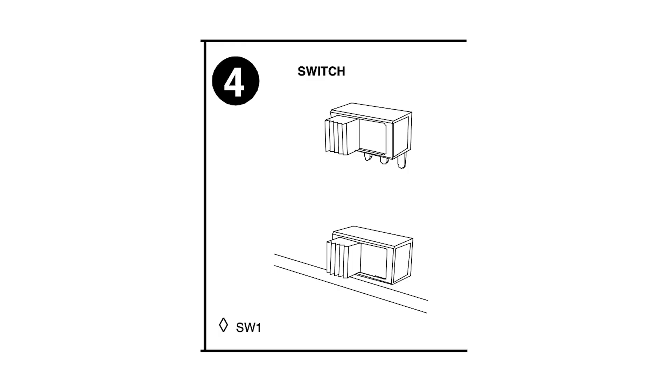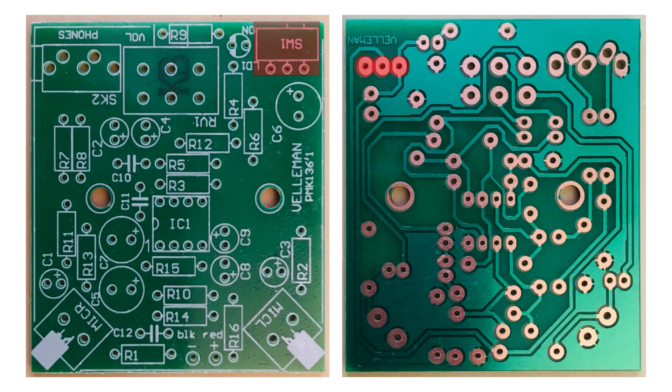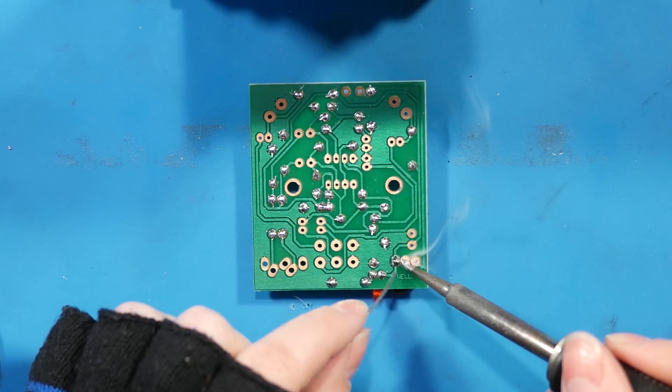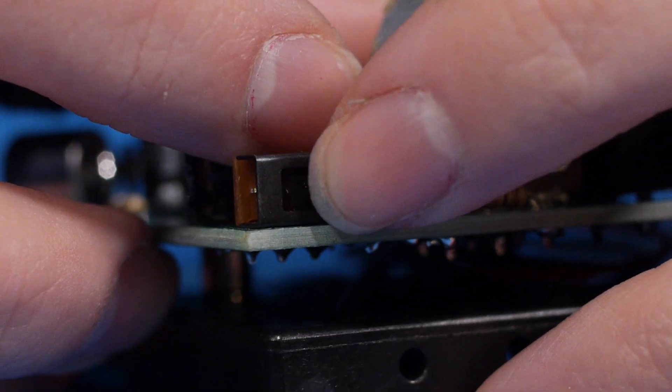Step four is the power switch. Find SW1 and solder it in place with the switch facing out. Push the switch left for off.